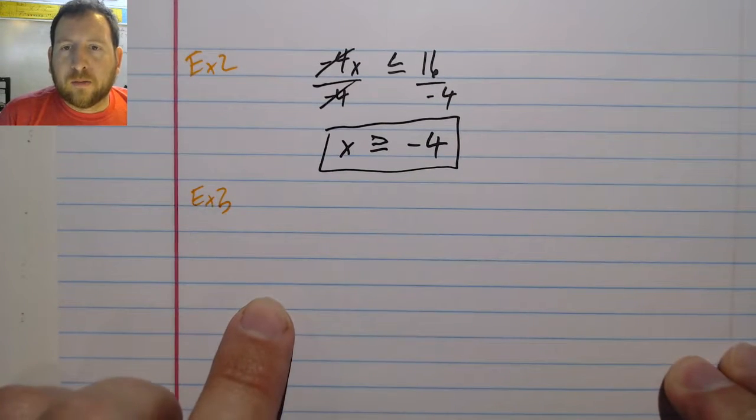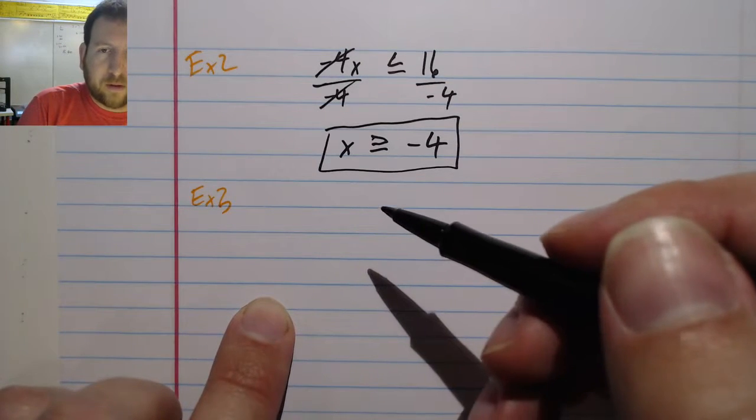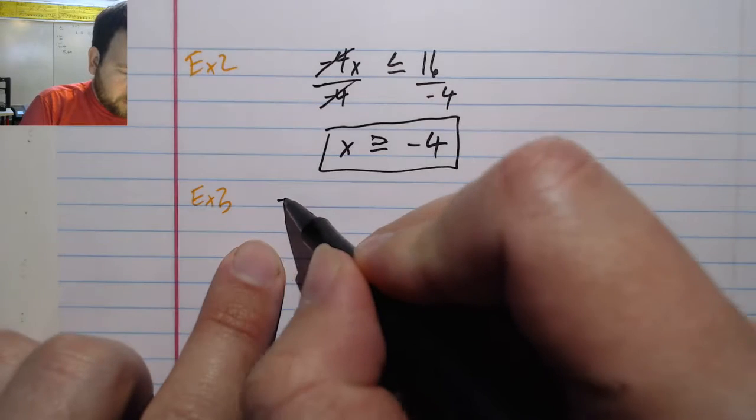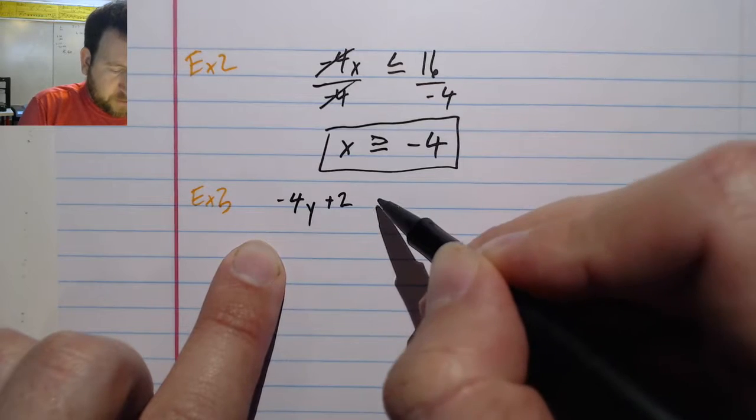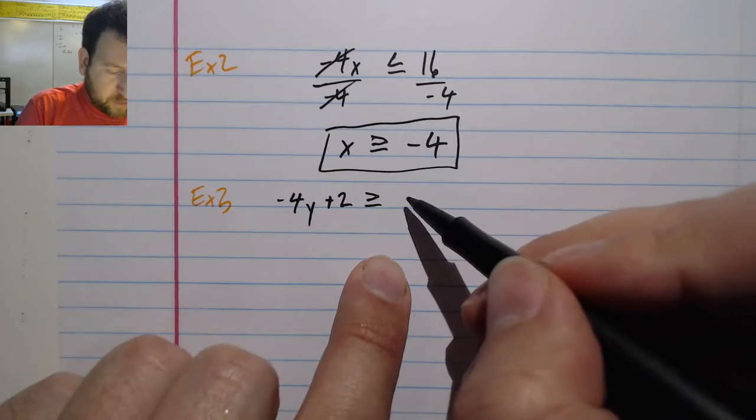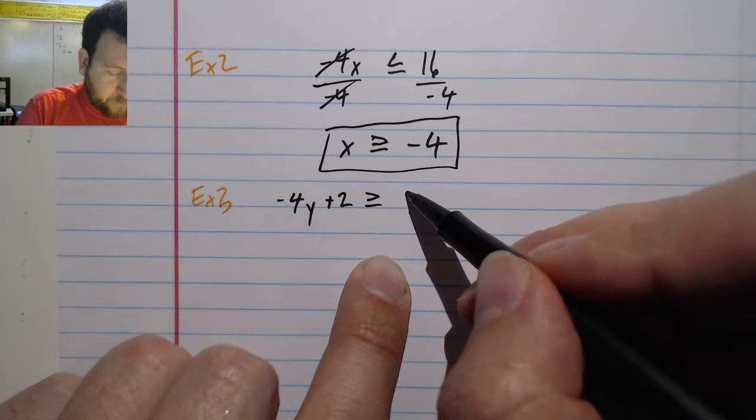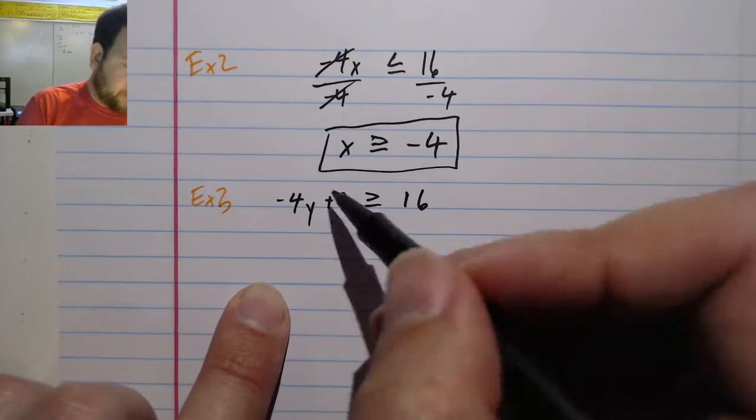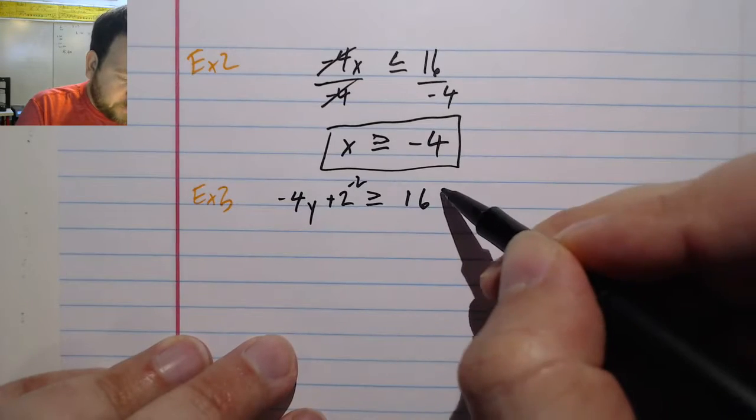All right, let's take... Let's see, I've got negative 4y plus 2 is greater than or equal to 16. All right, so now I have my two step equation. I'm going to start by subtracting 2 from both sides.